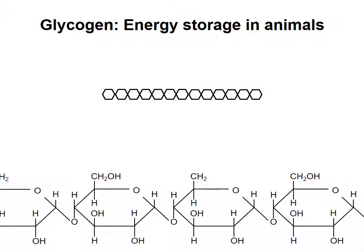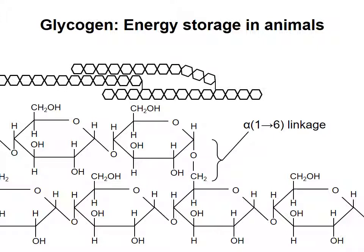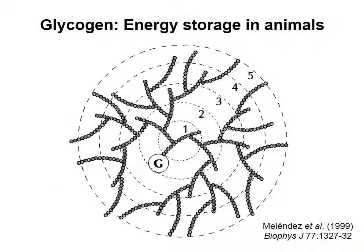These chains of 12 to 14 glucose monomers are connected to one another via alpha-1,6 linkages, which act as branch points. There are two branch points on every chain of 12 to 14 monomers. The first glucose chain of about 13 monomers is attached to a protein called glycogenin, represented by the circle containing the letter G in this diagram.